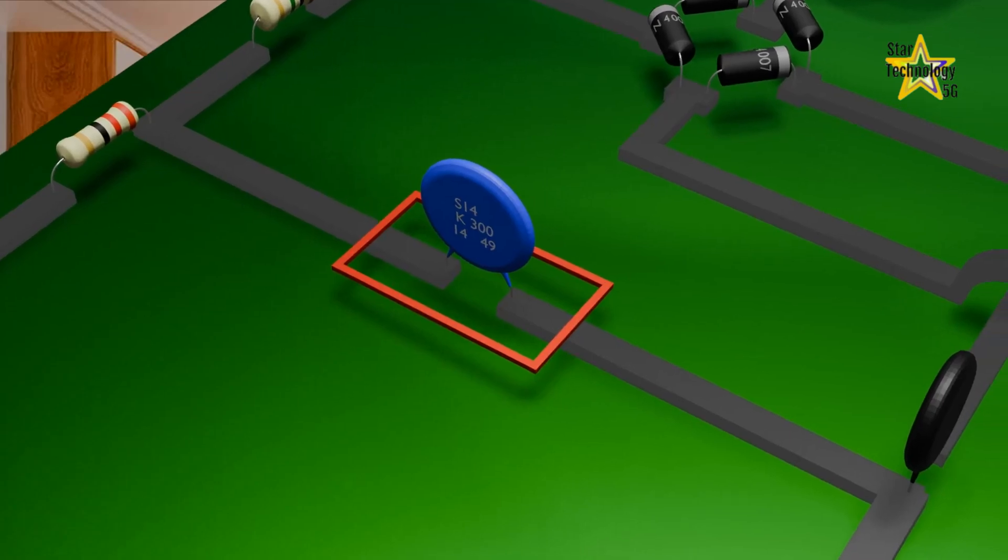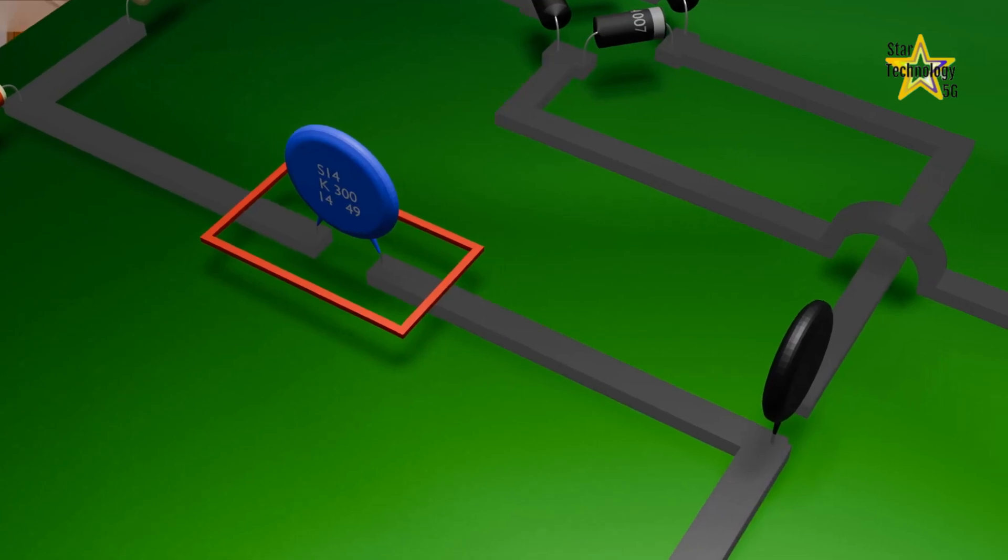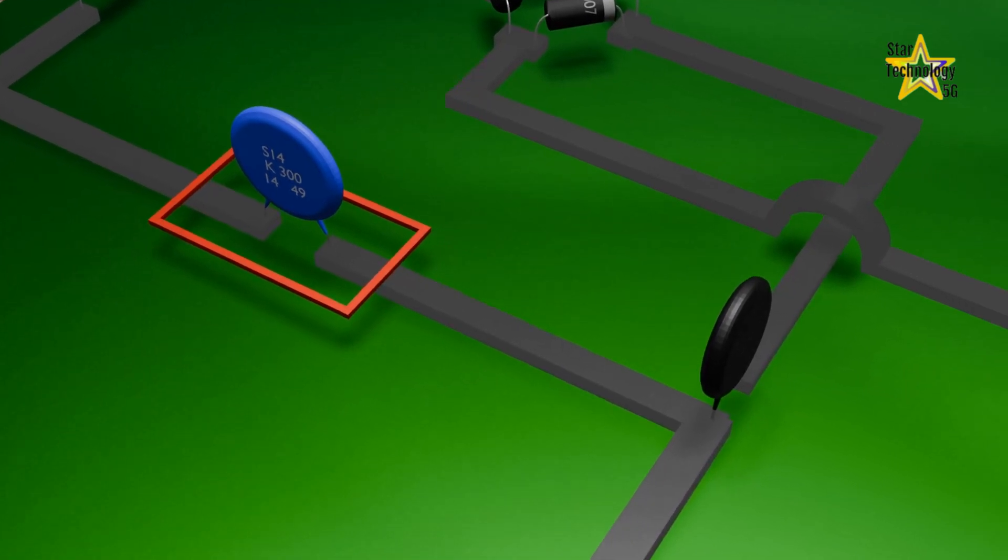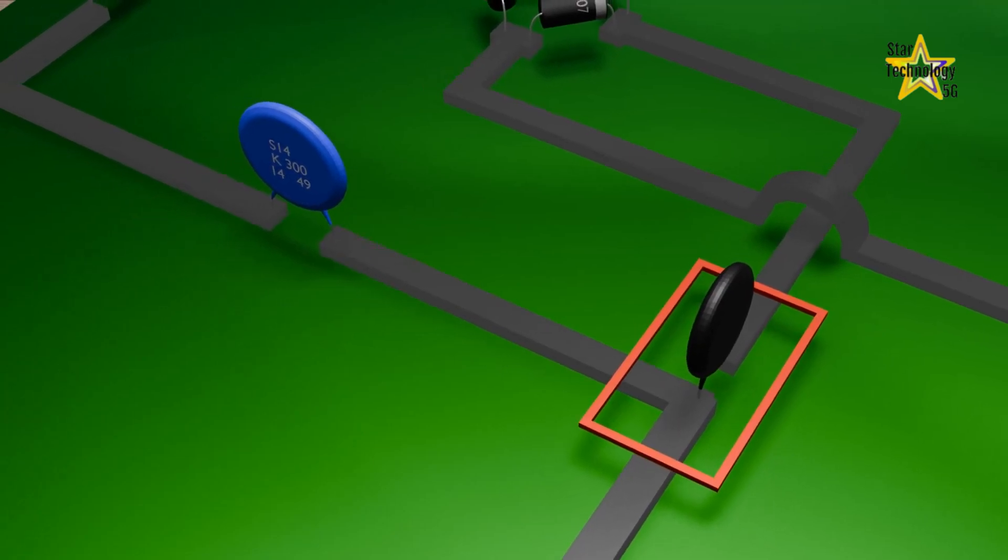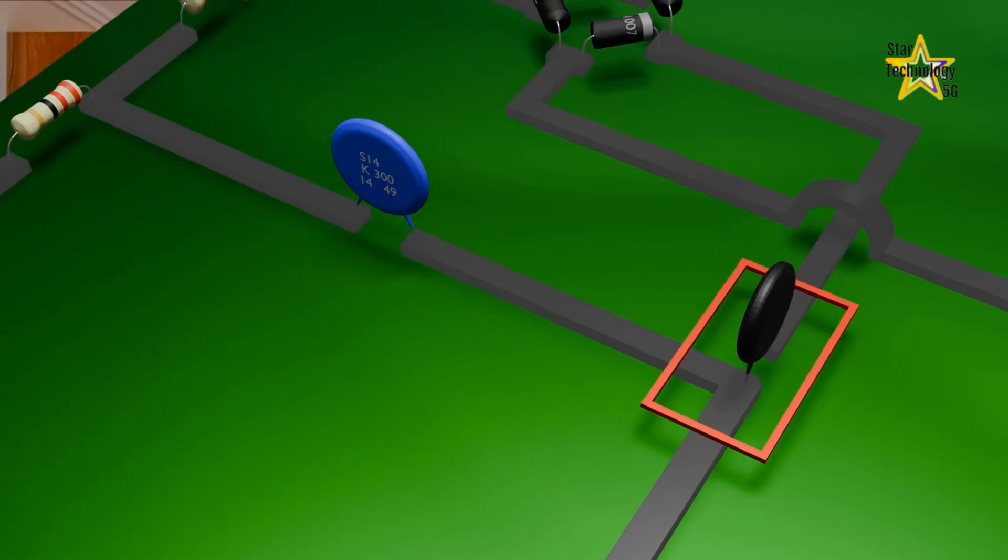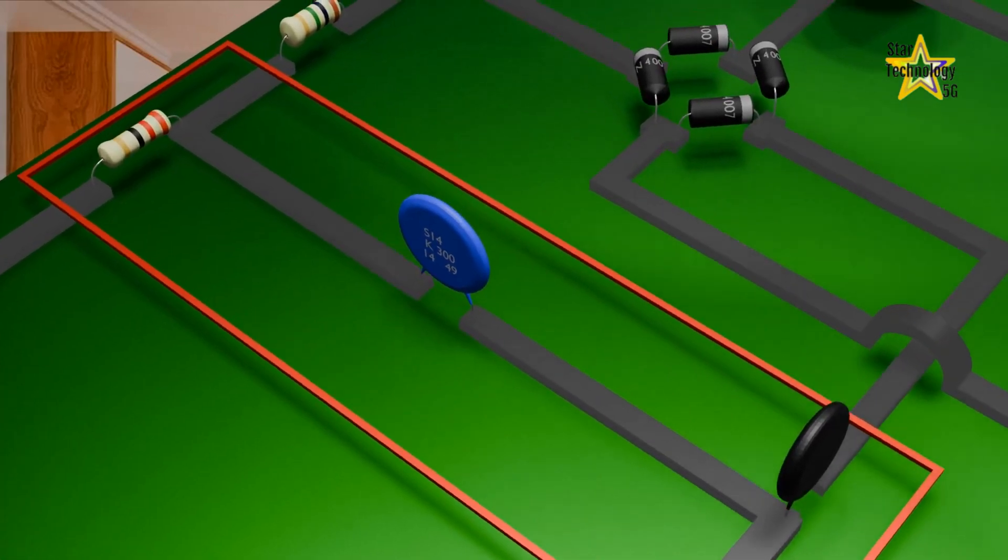The next one is the S14K300 varistor that protects against overvoltage such as lightning, power contact, and power induction. This is NTC10 temperature sensor, this is used to protect the charger from high temperatures. These three components are used to protect the charger.